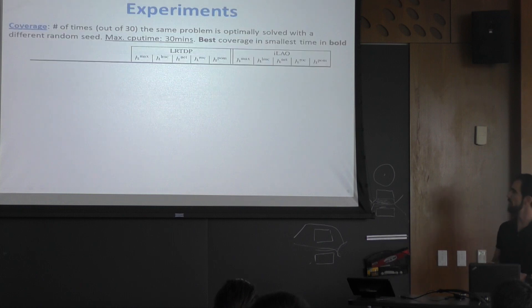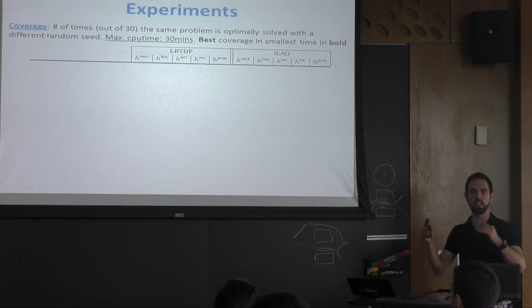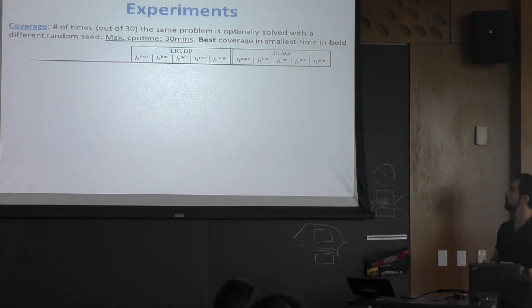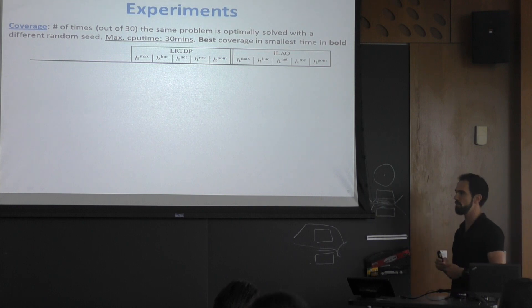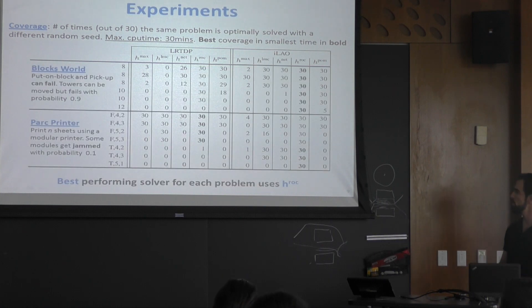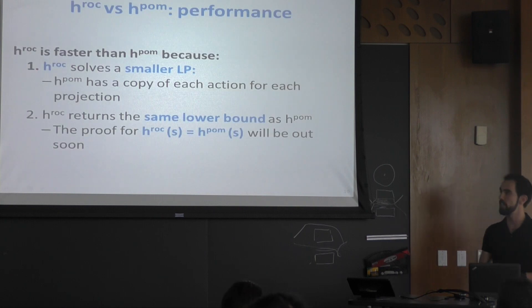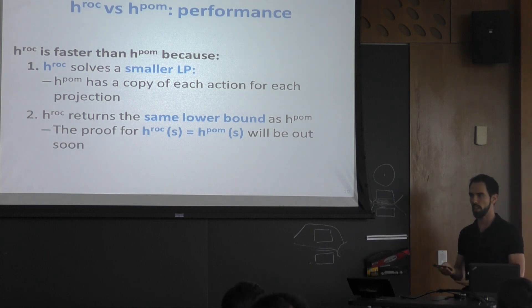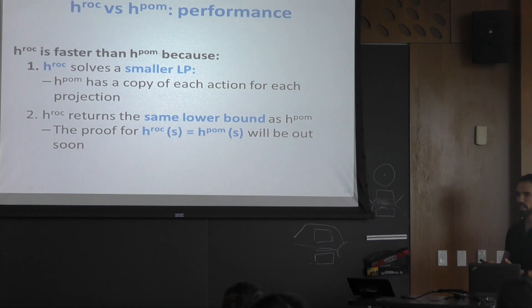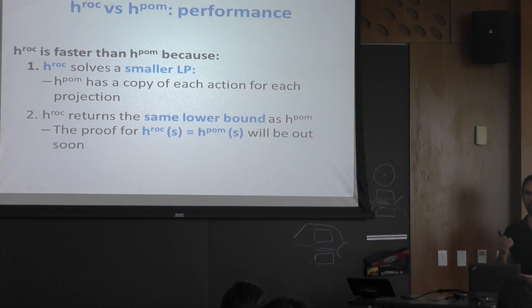Here are some experiments. Results show coverage — how many times out of 30 you find the optimal solution within a 30-minute cutoff; the best coverage is in bold, with ties broken by speed. H-ROC is always better than H-POM and always better than all other methods. The reason: H-ROC solves a much smaller LP with fewer variables and fewer constraints. In the paper we show that H-POM is less than or equal to H-ROC, and we now have a proof that they compute exactly the same thing. So H-ROC is a smaller LP that is equally informative — that's why it's faster.